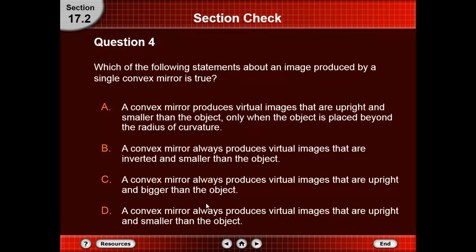Question number 4: which of the following statements about an image produced by a single convex mirror is true? Option A: a convex mirror produces virtual images that are upright and smaller than the object only when the object is placed beyond the radius of curvature. Option B: a convex mirror always produces virtual images that are inverted and smaller than the object. Option C: a convex mirror always produces virtual images that are upright and bigger than the object. Option D: a convex mirror always produces virtual images that are upright and smaller than the object.